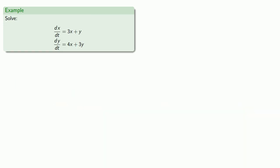For example, let's solve this system. We'll rewrite it in operator form. The derivative of xy is going to be 3, 1, 4, 3 times xy.